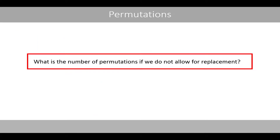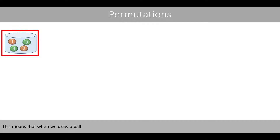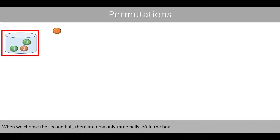What is the number of permutations if we do not allow for replacement? We here have the same box with the same 4 balls. We will now draw 4 balls without replacement. This means that when we draw a ball, we do not put it back or replace it with an identical ball. When we choose the second ball, there are now only 3 balls left in the box. We then continue to draw the balls until there are no balls left.